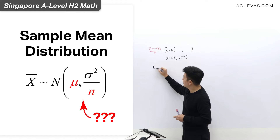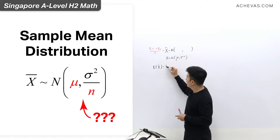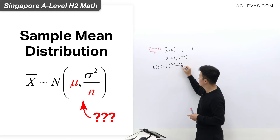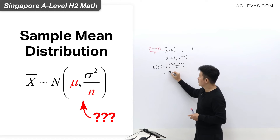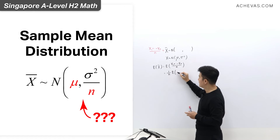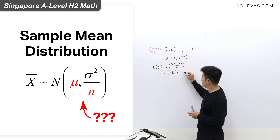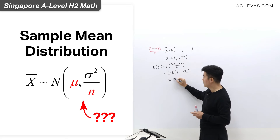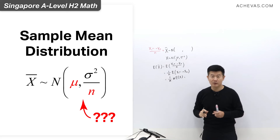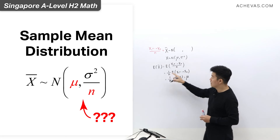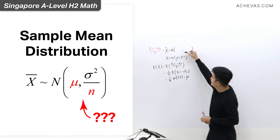We want to find out the expectation of x-bar. x-bar is x1 plus x2 plus x3 all the way until xn, divided by n. Since 1 over n is a constant, I'm going to shift it out of the expectation notation, leaving us with 1 over n times the expectation of x1 plus x2 plus ... plus xn. This simplifies to 1 over n times n times the expectation of x. The n's cancel, and we are left with just the expectation of x, which is mu. That is why the expectation of x-bar is mu.